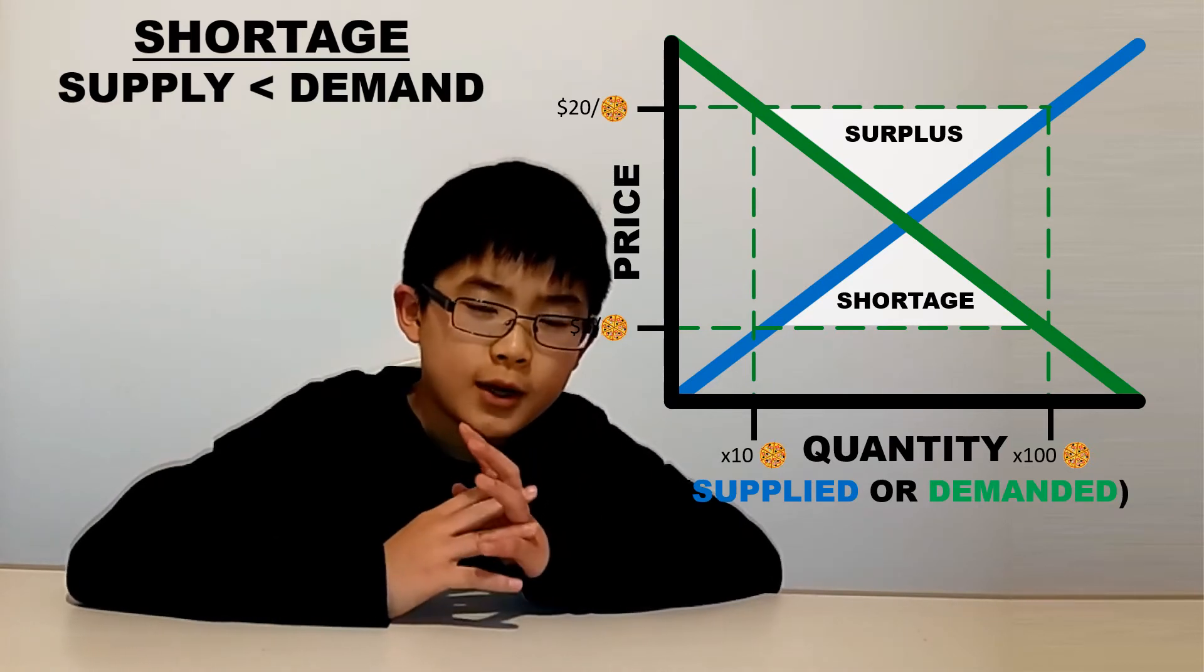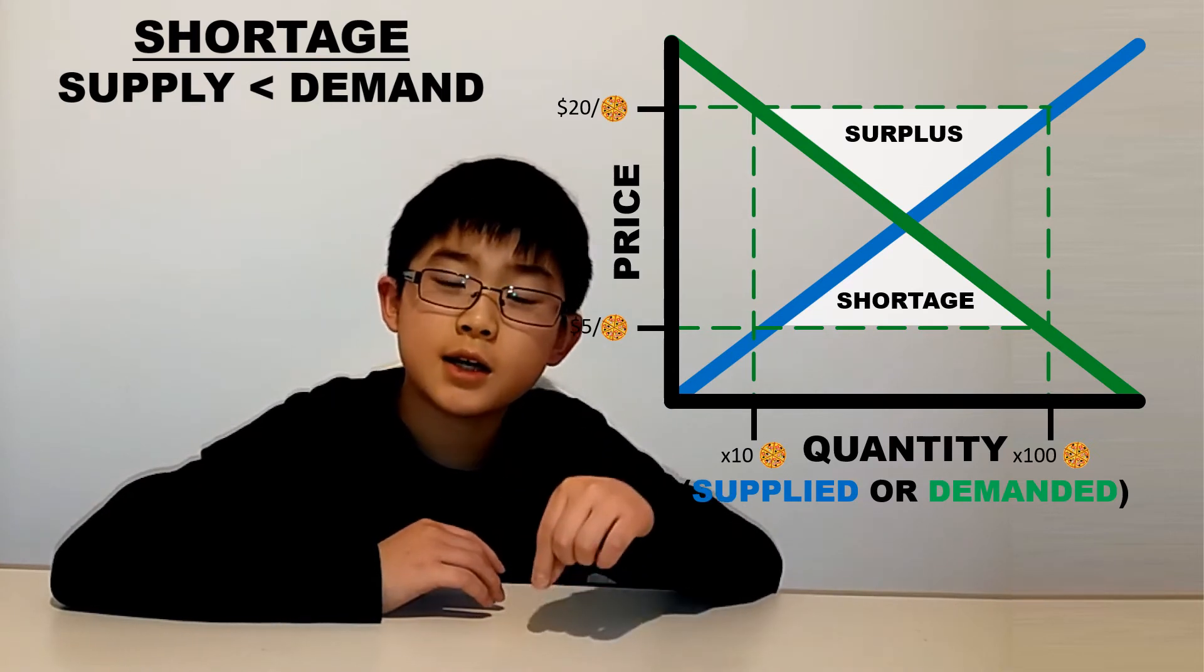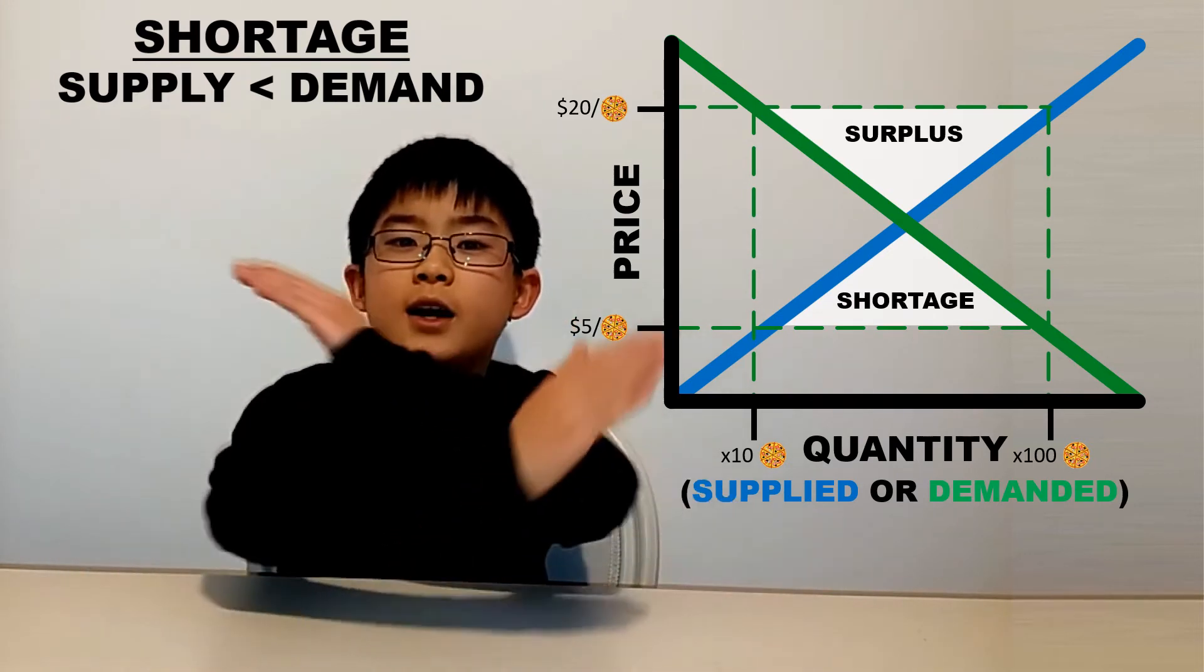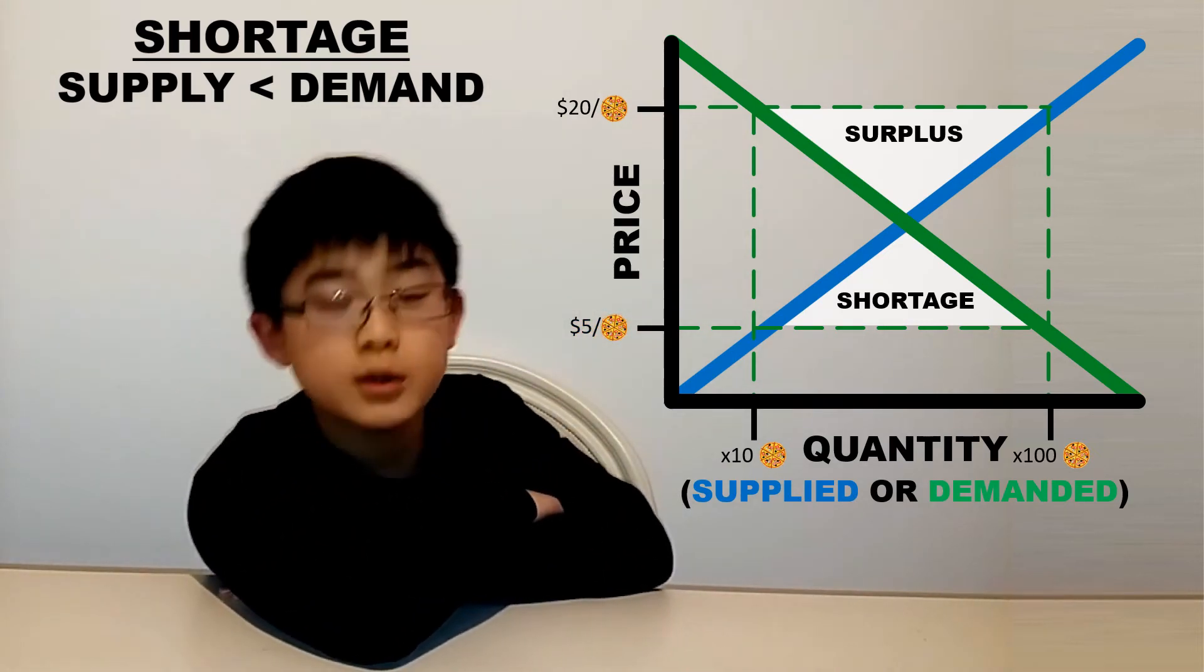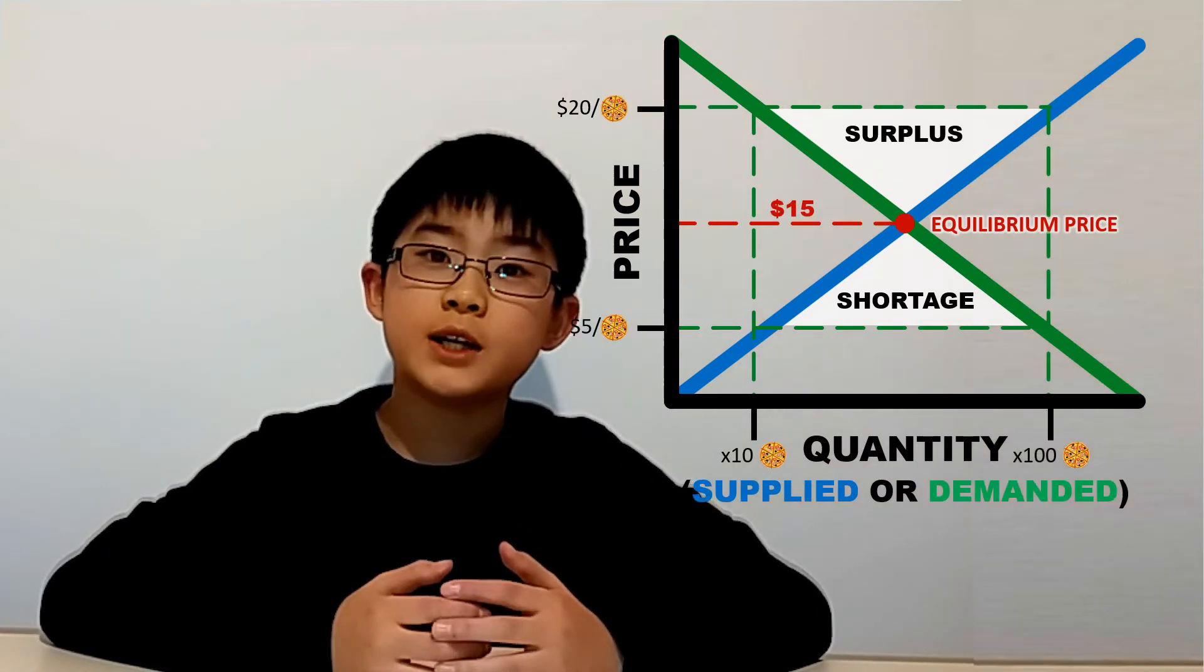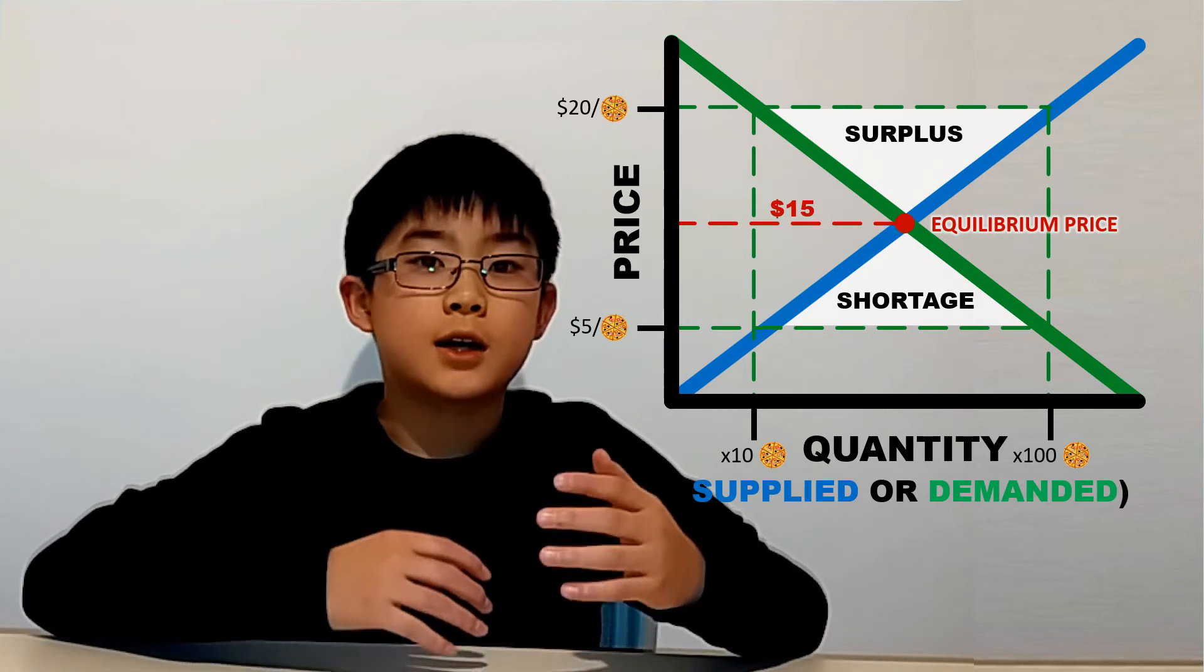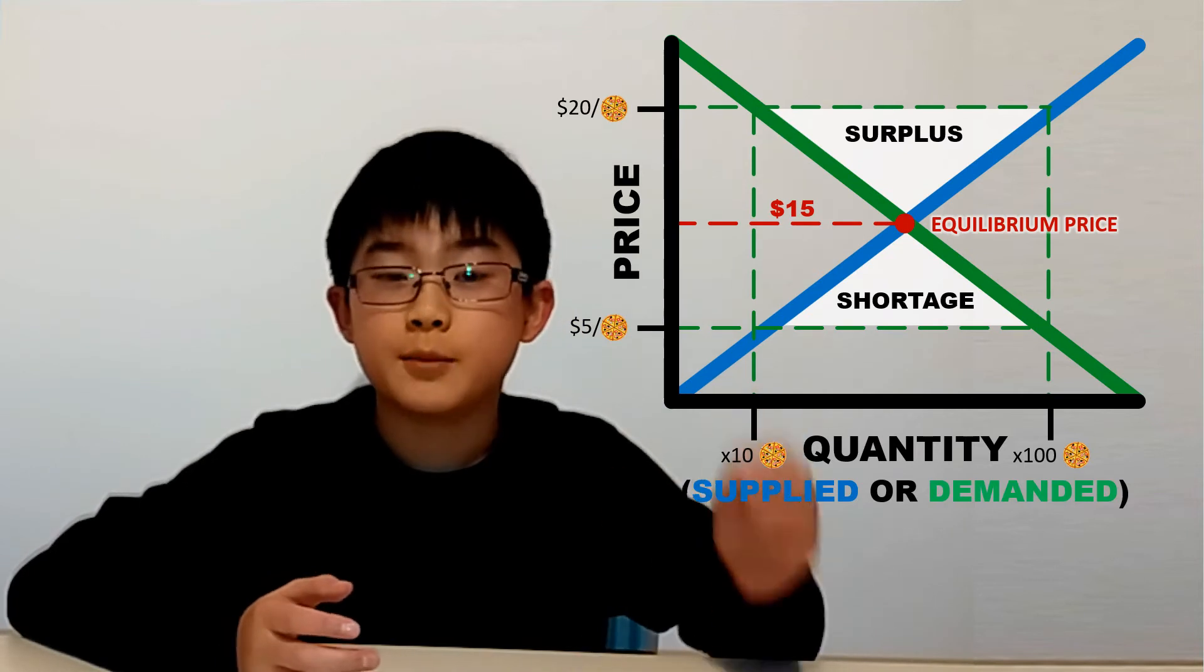Now, there's one price which suppliers are incentivized to produce the same amount that buyers demand. This is called the equilibrium price, and it's really easy to find by just finding where the X meets. If we look at our graph, that is the equilibrium price, say $15 per pizza. Usually, without government intervention, a product or service in a free market society will find its way to the equilibrium price because producers will raise and lower the price until they get to that equilibrium price where demand equals supply.